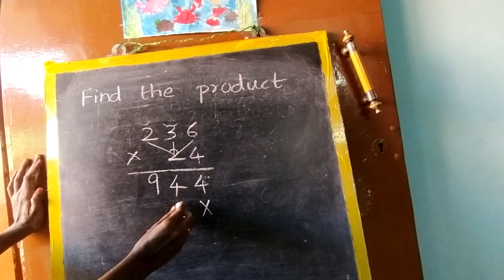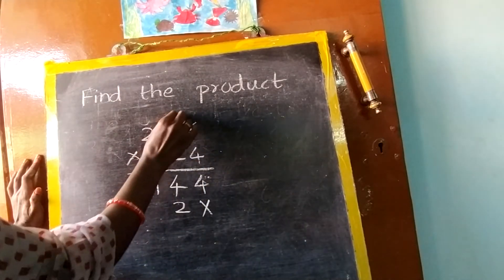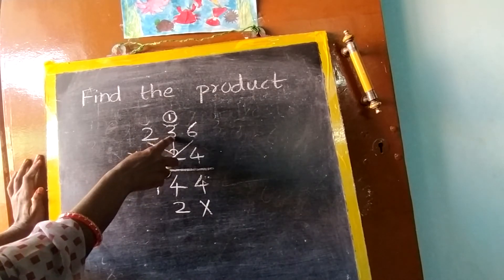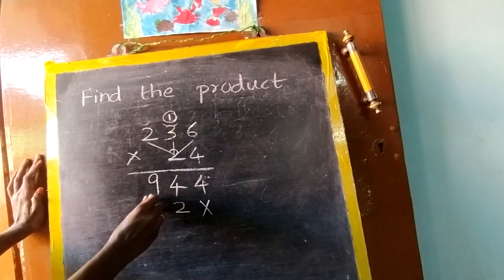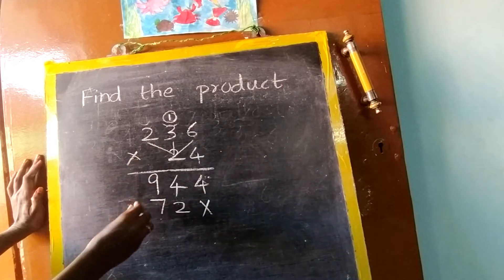So now 2, 6 are 12. So 2 here, 1 carry. Next 2, 3's are 6. 6 plus 1, 7. Now 2, 2's are 4.